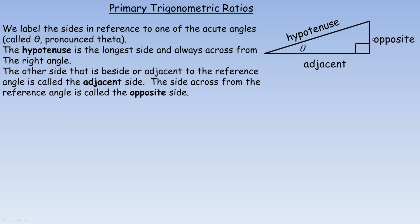The other side, the one that's across from the angle, is called the opposite side because it's opposite the angle in the triangle. So those are the three names of the sides: hypotenuse is across from the right angle, the adjacent side is beside your reference angle, and the opposite side is across from the angle. If my angle theta had been up here, these would switch — that would become the adjacent side and the other would be the opposite.